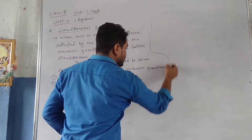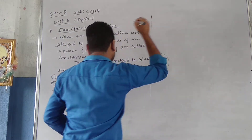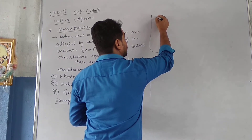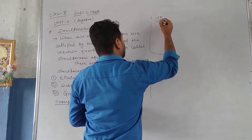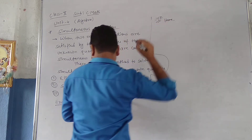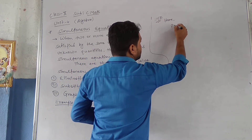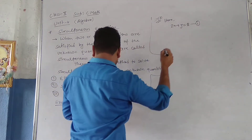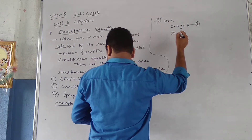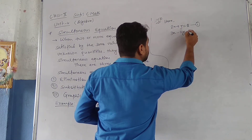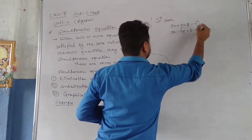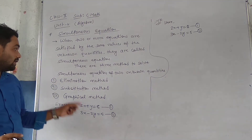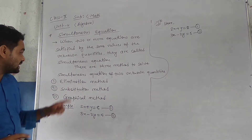At first we are going to solve this by using the elimination method. We have equation one: 2x plus y equals to 8, and equation two: 3x minus 2y equals to 5. In the elimination method, we have to eliminate — cancel out — either x or y from both equations. For that, the coefficient of the variable we want to eliminate must be the same in both equations.